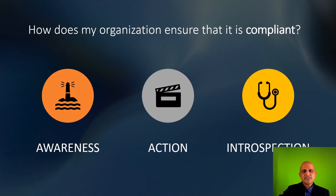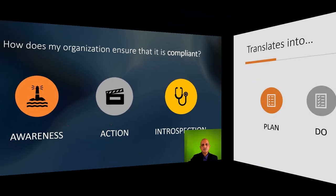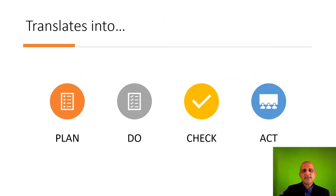Organisations ensure that they are compliant via a process of awareness, action and introspection. This essentially translates to planning, doing, checking and acting, and this all translates to the process of continuous quality improvement.